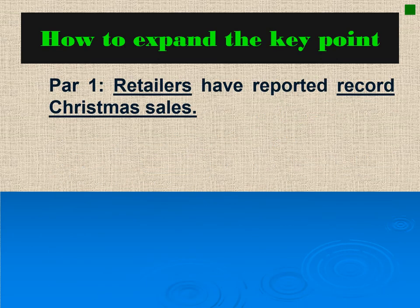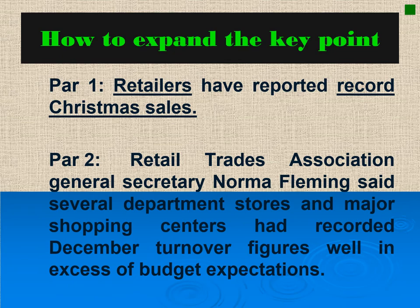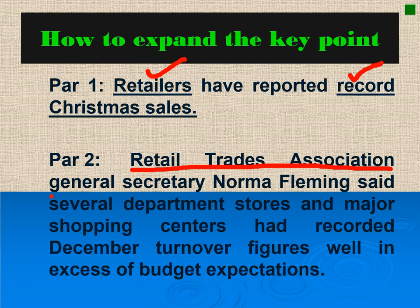Now let's look at this revised version. Again, the key elements in paragraph 1 are 'retailers' and 'record Christmas sales.' Paragraph 2 now reads: Retail Trades Association General Secretary Norma Fleming said several department stores and major shopping centers had recorded December turnover figures well in excess of budget expectations. Are the elements in paragraph 2 connected to the elements in paragraph 1? Retail Trades Association General Secretary Norma Fleming is a retailer, so it is obviously connected to that element.